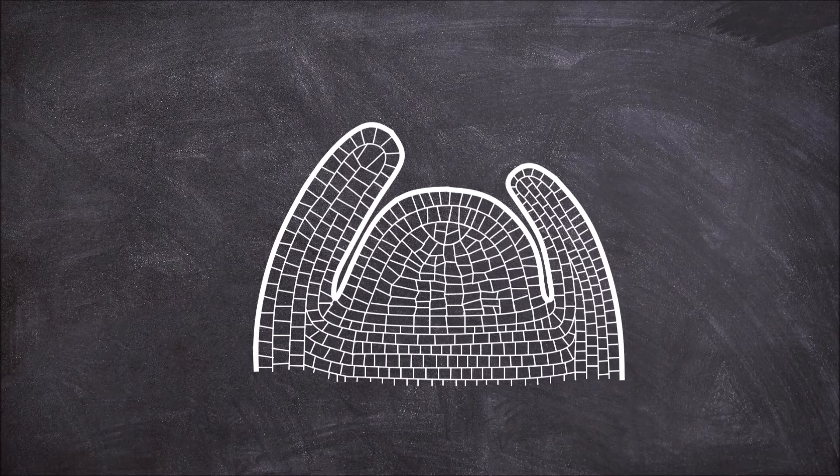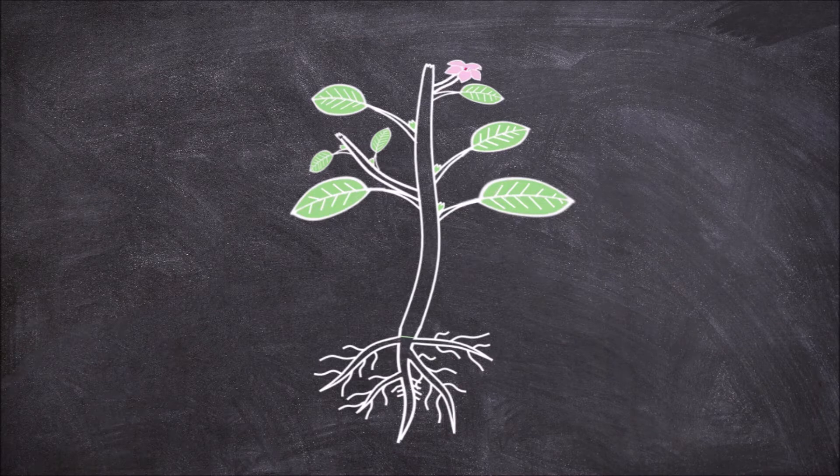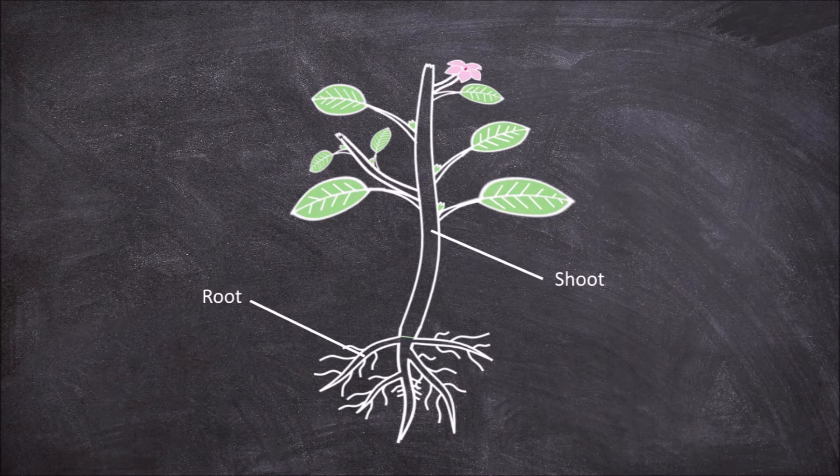In this video we are going to look at the structure of the shoot apical meristem. Meristems are areas of undifferentiated tissue found in the growing areas of the plant such as in the shoots, roots and flowers.